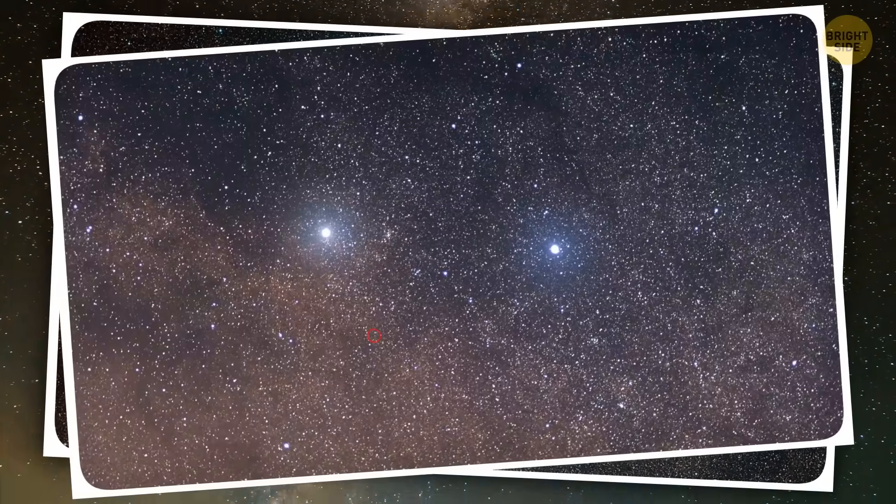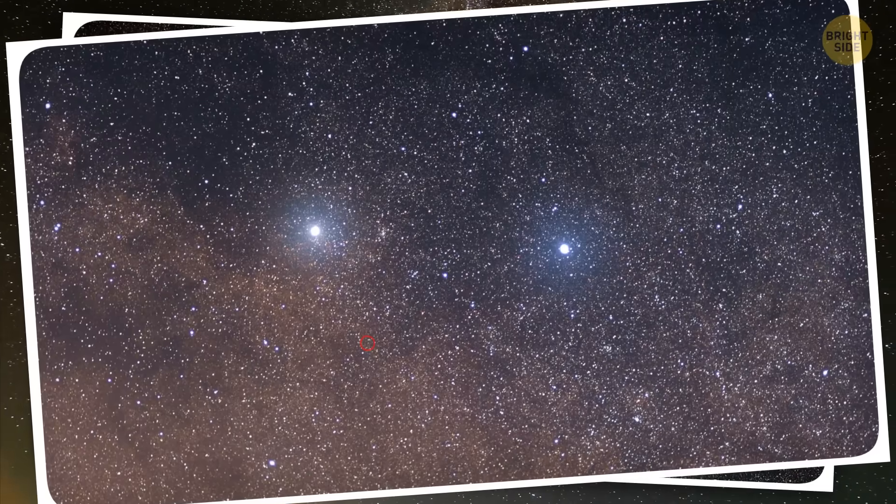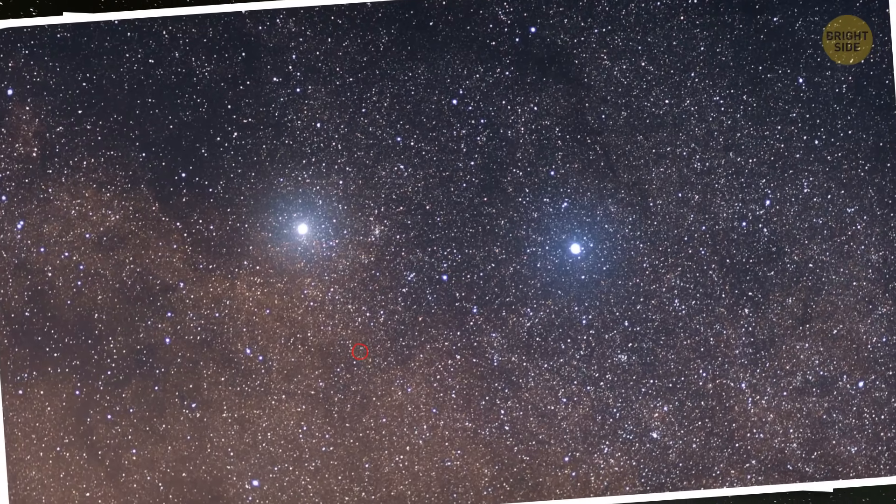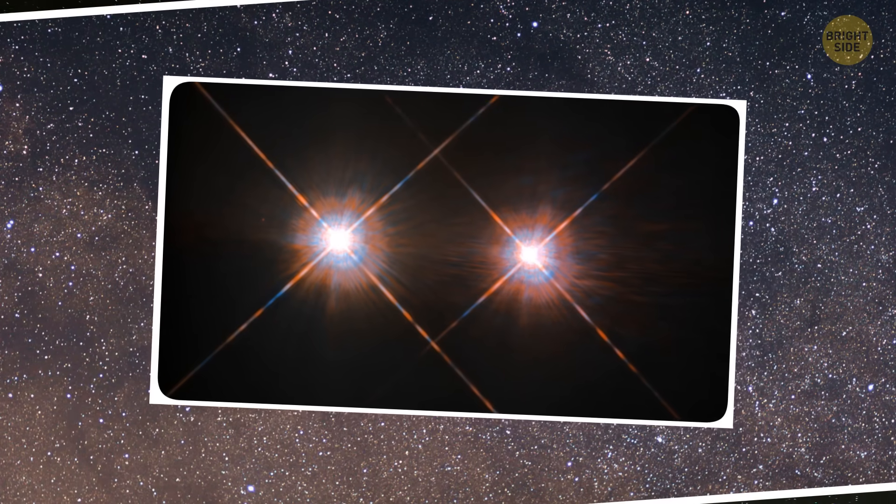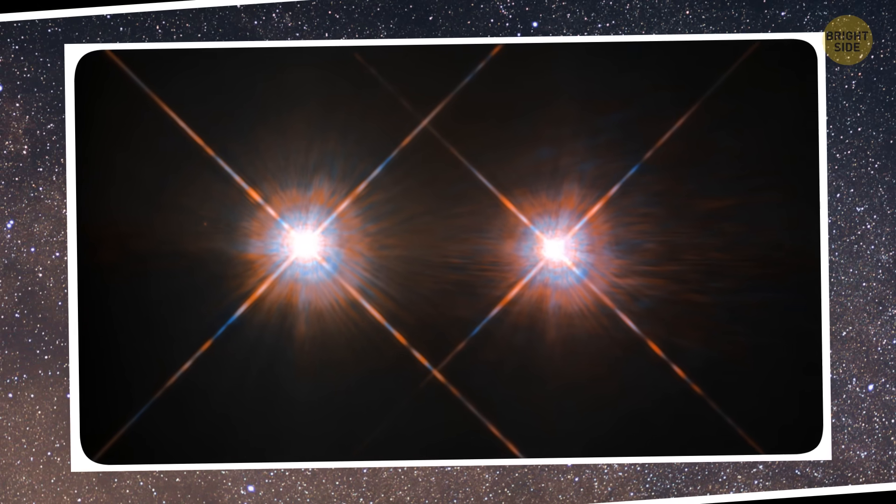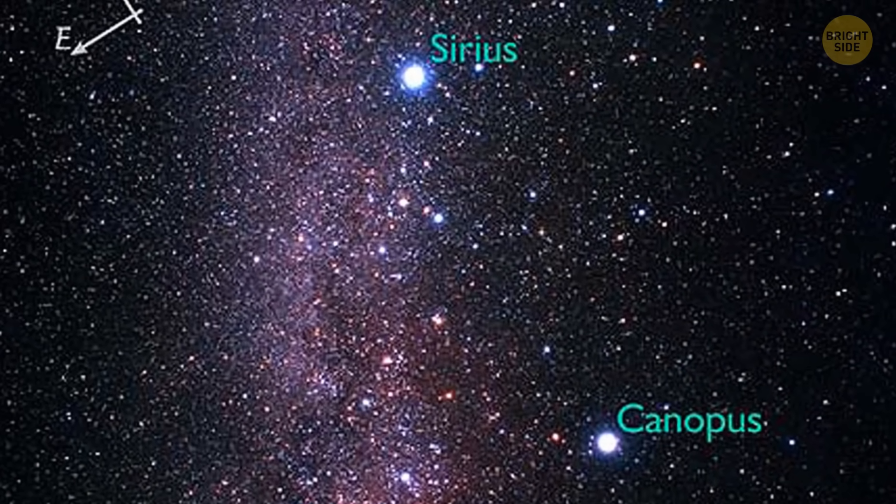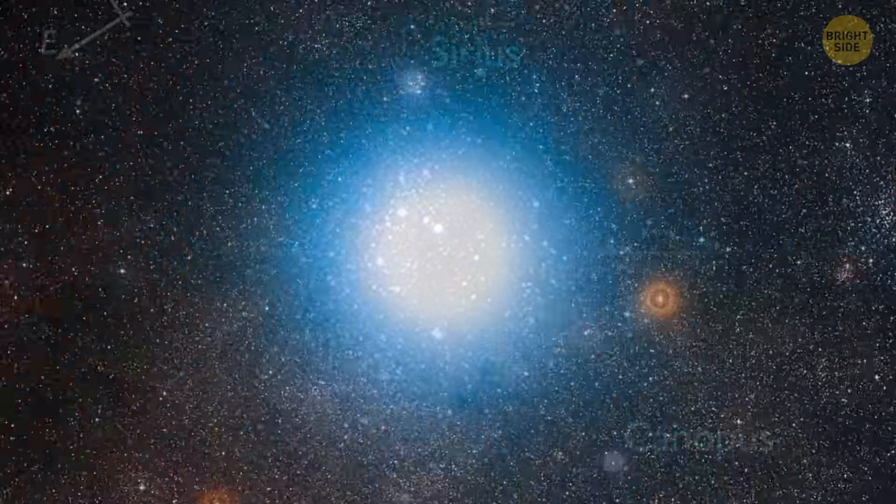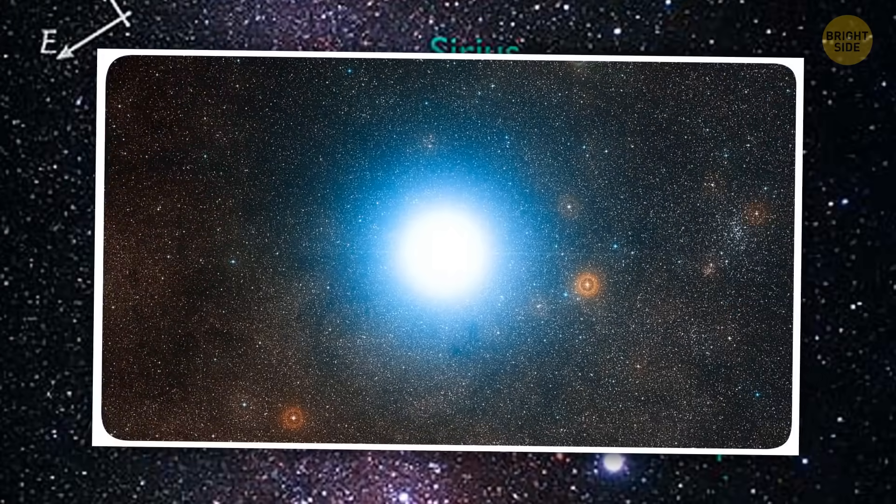For example, Alpha Centauri A and Alpha Centauri B together form a binary system. They're some of the brightest stars in their constellation and the third brightest in the night sky, outshined only by Sirius and Canopus. But if you look at them, they'll appear to be a single star.